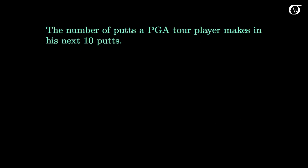Consider the number of putts a PGA Tour player makes in his next 10 putts. We have a fixed number of trials (10), each trial has two outcomes (make or miss the putt), and we're counting putts made — so a few conditions are satisfied. However, the probability of success over those next 10 putts is going to be changing: they're not the same putt each time — some are long, some short. Also, the trials are not independent. If a player misses a putt, the next one is likely very close and he has a good chance of making it; if he makes one, they move to the next hole where the putt may be longer. Human psychology also plays a role — making several in a row increases confidence, missing several decreases it. So the random variable X does not have a binomial distribution.